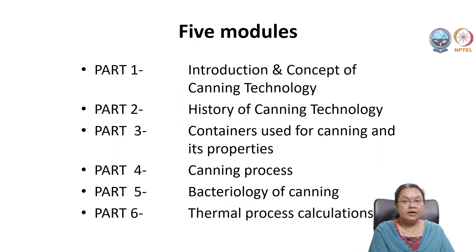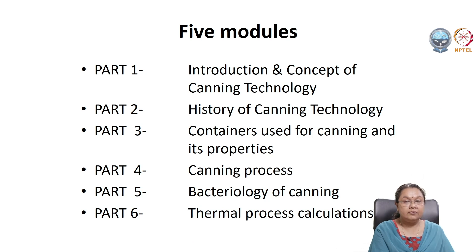The course is divided into five modules, which are again divided into 11 parts. In part one, we will discuss the concept of canning with a brief introduction. In part two, the history of canning will be discussed. In part three, we will cover the various containers used in the canning industry, can processing, and their properties. In part four, the canning process will be discussed, and in part five, the microorganisms and spoilages involved in canning.